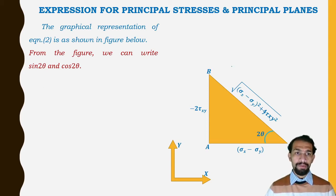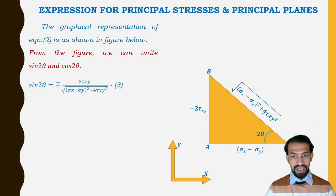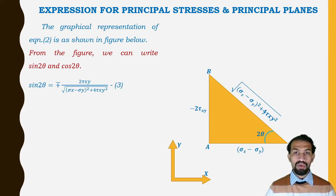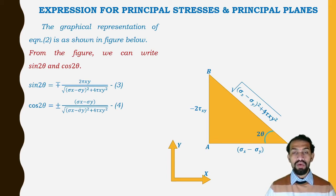From this right triangle, we can write: sin2θ = ±2τxy / √[(σx − σy)² + 4τxy²]  (Equation 3), and cos2θ = ±(σx − σy) / √[(σx − σy)² + 4τxy²]  (Equation 4), where the ± accounts for the two principal plane orientations.